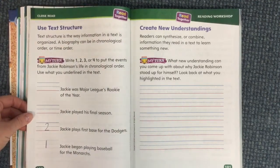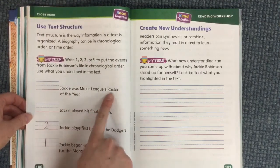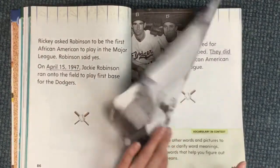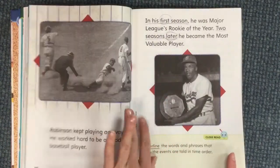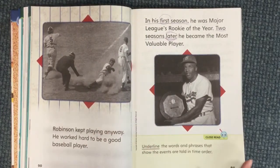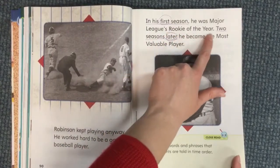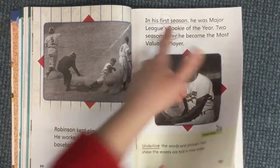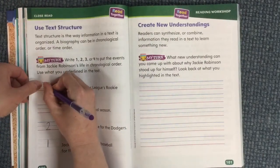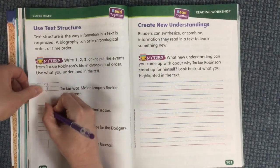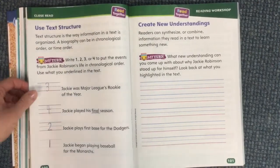What would be next — playing his final season, or being Major League's Rookie of the Year? In his first season, he was Major League's Rookie of the Year, so this comes before his final season — that's number three. Which means playing his final season is number four, and 'final' means last, so I know that one's right.